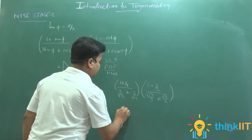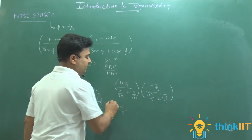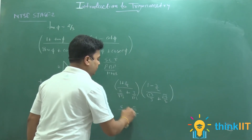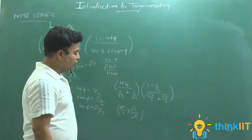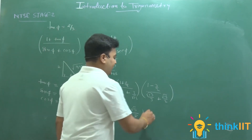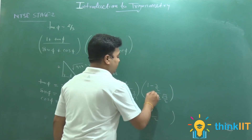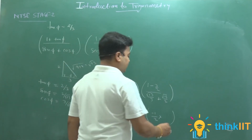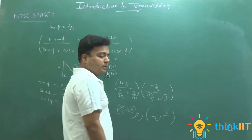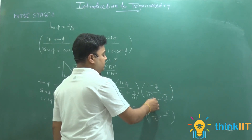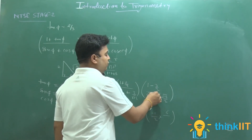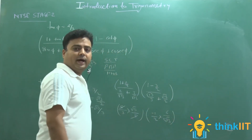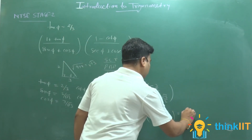यहां से पहले bracket में: (1 + 2/3) = 5/3, और denominator (2 + 3)/√13 = 5/√13। तो पहला bracket = (5/3) / (5/√13) = √13/3। दूसरे bracket में: (1 − 3/2) = −1/2, denominator का LCM = 6, तो (2√13 + 3√13)/6 = 5√13/6।